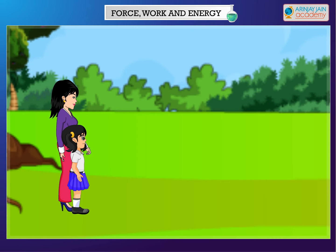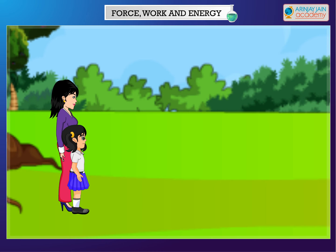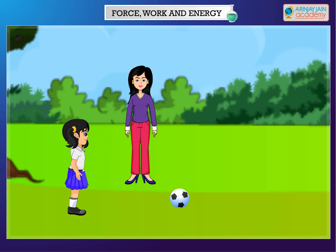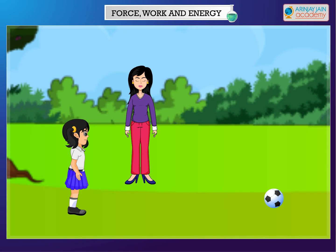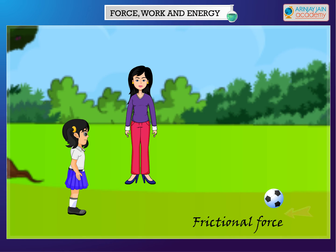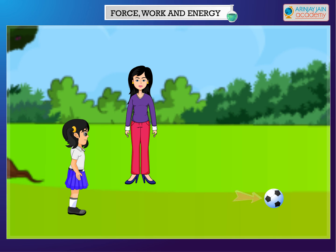Frictional force — friction is a force that stops things from moving easily. Let us do one activity: roll a ball along the floor. A ball stops rolling after moving a certain distance because of a special force called friction. It comes into play only when an object moves over another, and it always acts opposite to the direction of motion of the object.